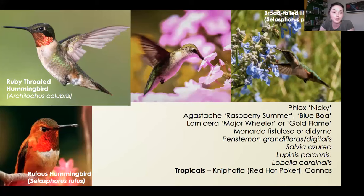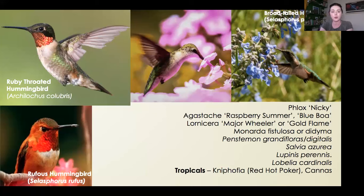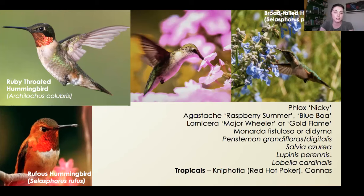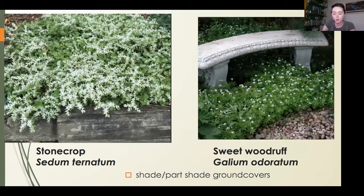For agastache, 'Morello' is a pinkish dusky rose variety with a pretty good track record too, while the orange ones are better treated as annuals. And 'Major Wheeler' honeysuckle — Lonicera sempervirens — is not the aggressive Japanese honeysuckle; it's much more tame. We have tons of hummingbirds swarming ours on the gazebo in late summer when it's in bloom. If you have a place for a vine, that would be a great option.